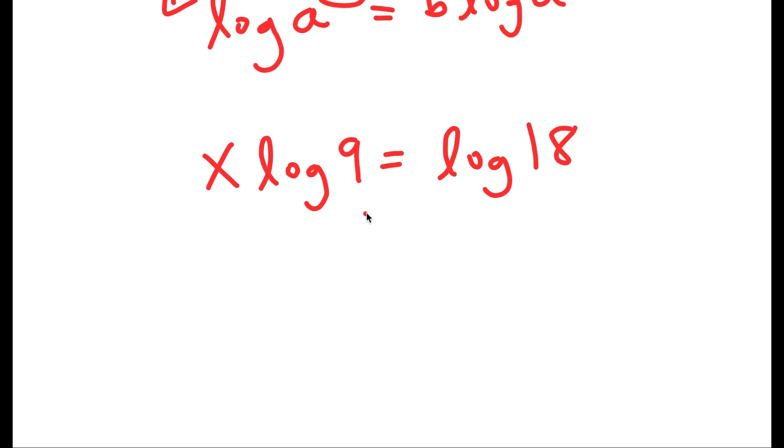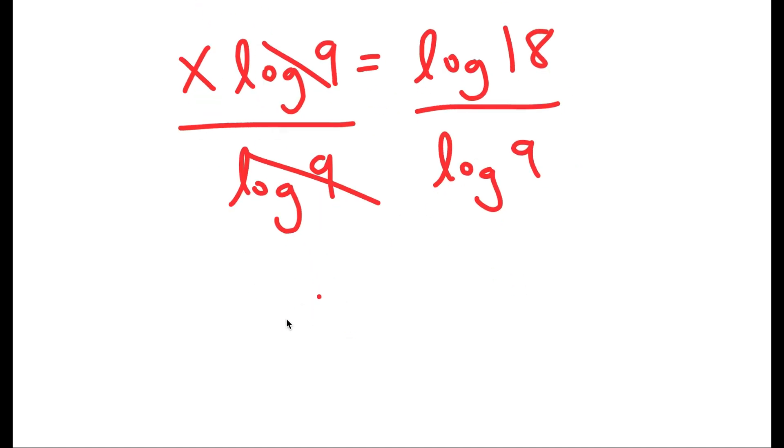Now from here, I'm going to divide both sides by log 9. So these two cancel out, and I get x is equal to log 18 over log 9.